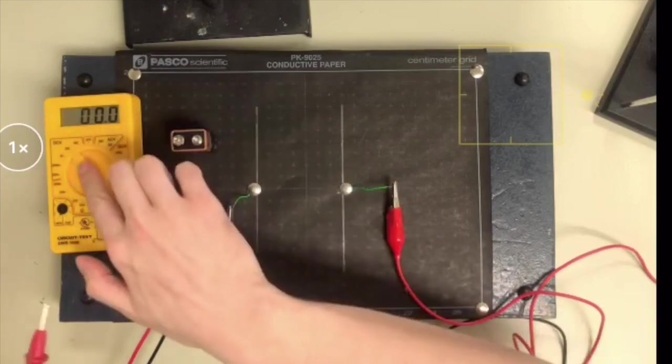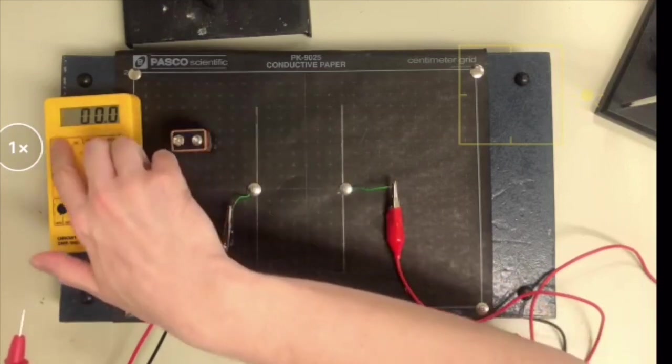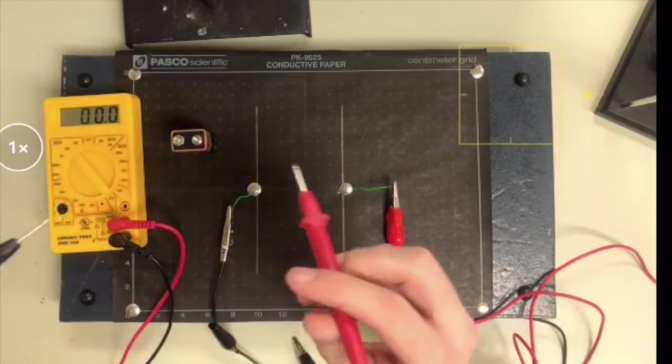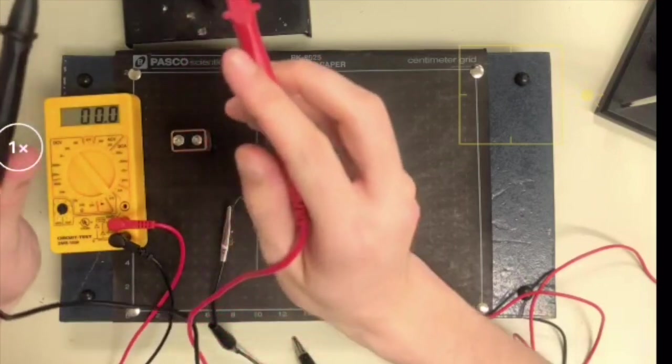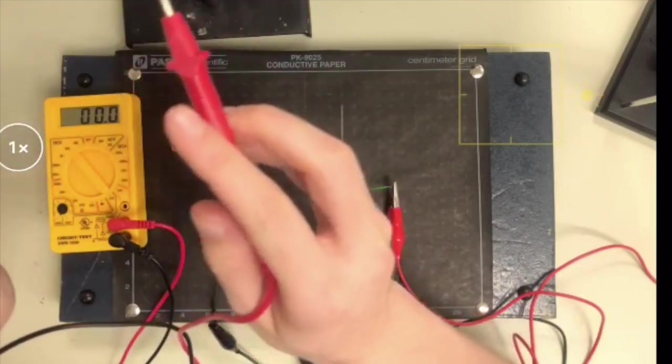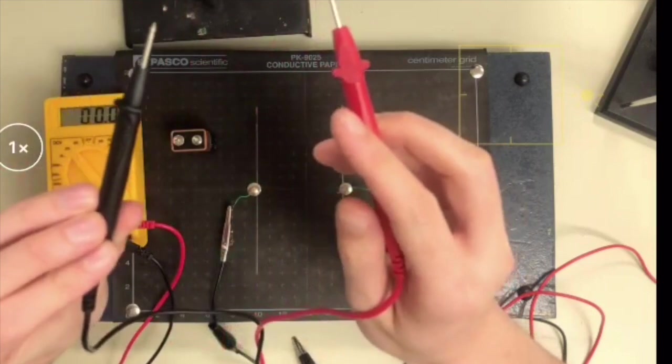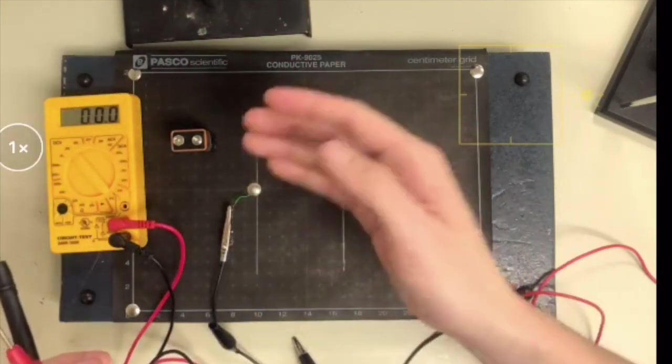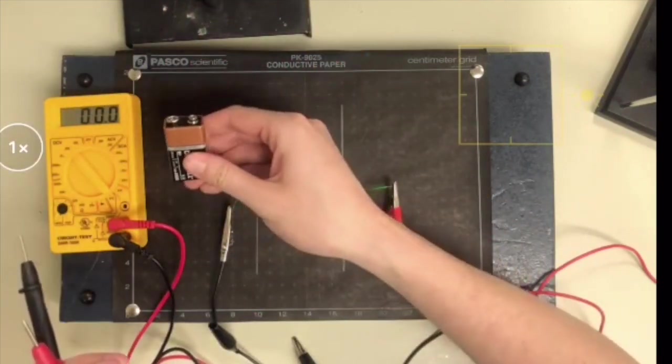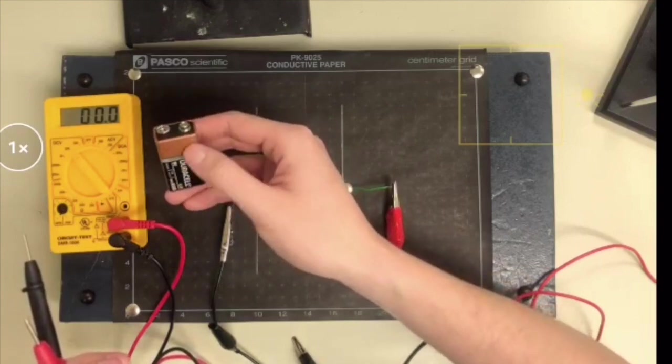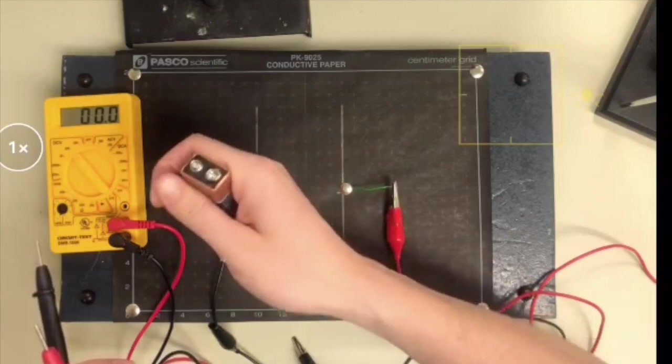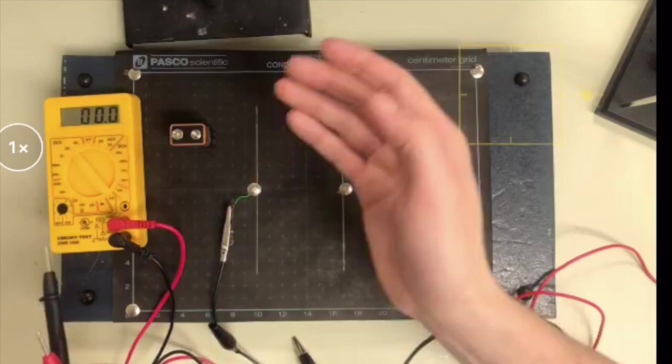So you're going to make sure your multimeter is set to the 200 DC volt setting. And then these probes, what they do is they're capable of measuring the potential difference between two points. So a nine volt battery, what does that mean? Well, a battery is two basically reservoirs of charges that would like to get away from each other. They have potential energy.